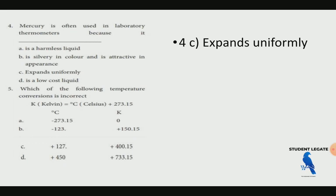So what is incorrect? If you put it by the formula, option D is incorrect. The formula is: Kelvin is equal to Celsius plus 273.15. If you substitute that, you will get the answer.